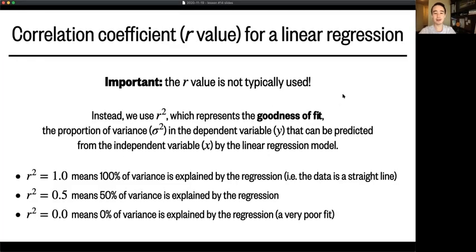So what is the r value, this correlation coefficient? Well, it turns out we don't actually use the r value. Instead, we more often use the r squared value, which represents the goodness of fit, or in other words, how well the regression did. Now, statistically, this represents the fraction of variance in your y data that is able to be explained from your x data using the regression model you just calculated.